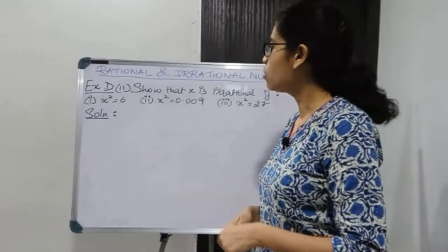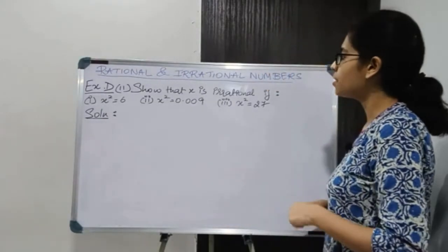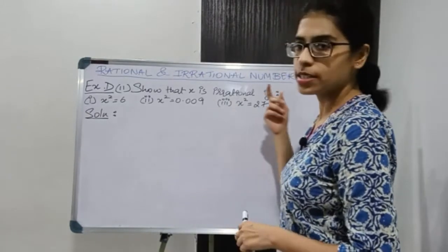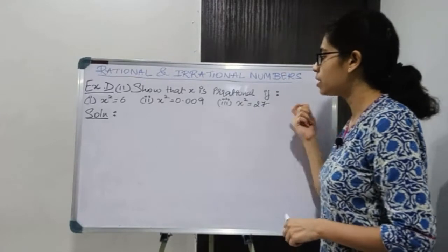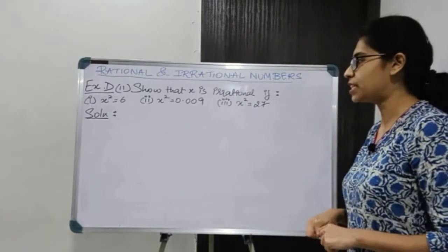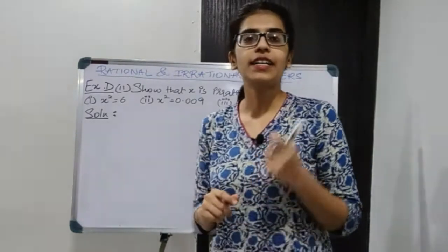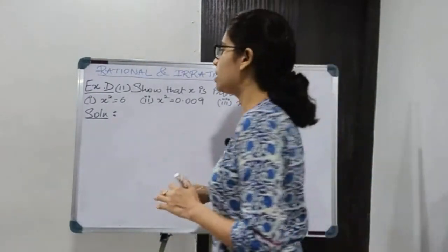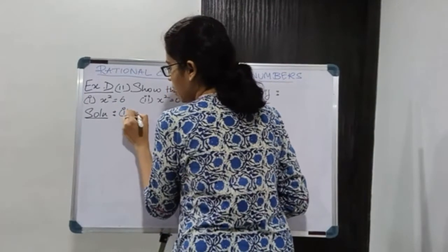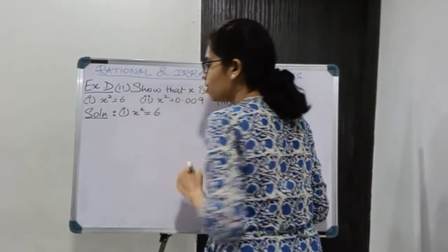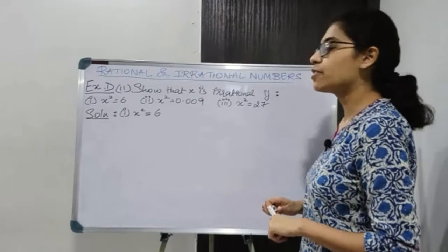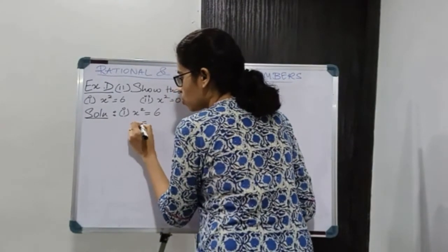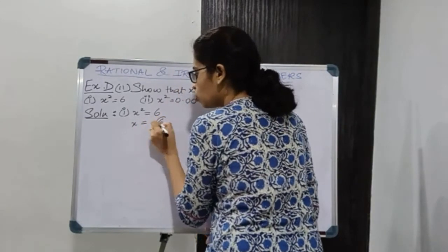Question number 11: show that x is irrational if x square is equal to 6; second part x square is equal to 0.009; third part x square is equal to 27. So we have to prove that x is irrational in these 3 cases. Let's begin with the first case: x square is equal to 6. Now if I take square root on both the sides, x will be square root of 6.